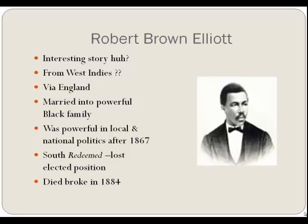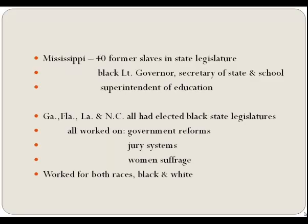Robert Brown Elliott is a very interesting story. It's believed he's from the West Indies and came to this country via England. He went to the South and married into a very powerful Black family, which helped his position in society. He became very powerful in local and national politics from about 1867. Unfortunately, when the Democrats redeemed the South, he lost his elected post and died broke in New Orleans in 1884.